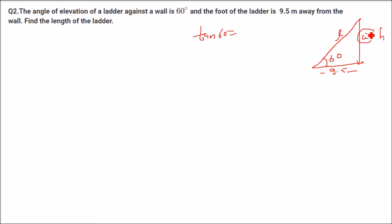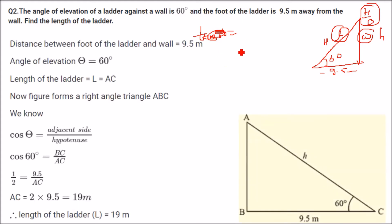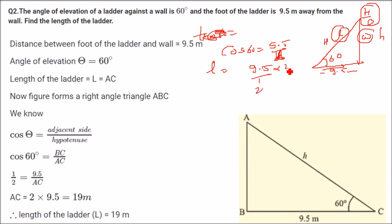But here, we have to find the length of the ladder. This is the hypotenuse and this is the base. So hypotenuse and base — what trigonometric ratio can we use? We can use the cos angle. Cos 60 equals base upon hypotenuse, that is 9.5 by L, where L is the length of the ladder. Cos 60 is half, so L equals 9.5 into 2, which is 19 meters. So the length of the ladder is 19 meters.